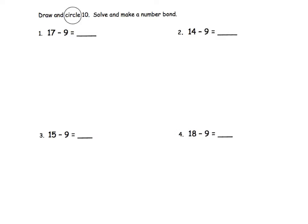To solve 17 take away 9 equals, I will begin by drawing 17 circles. 1, 2, 3, 4, 5, 6, 7, 8, 9, 10, 11, 12, 13, 14, 15, 16, 17.